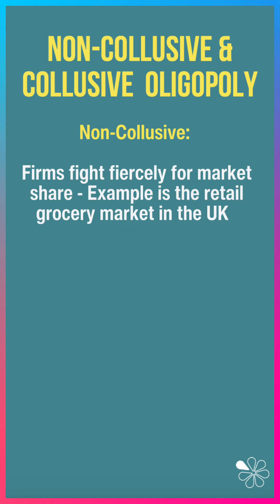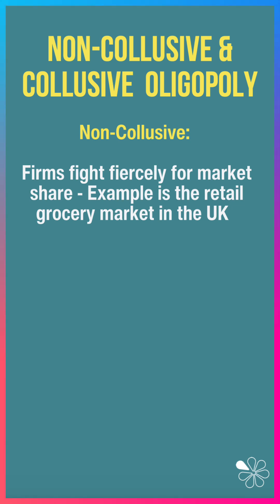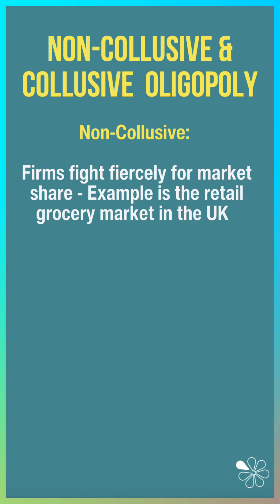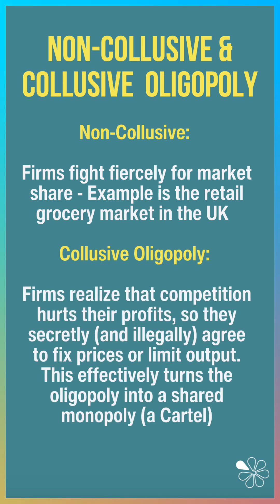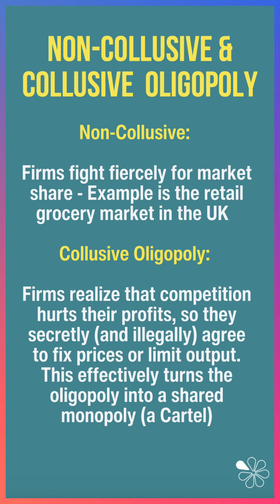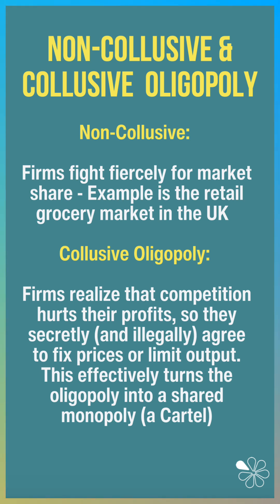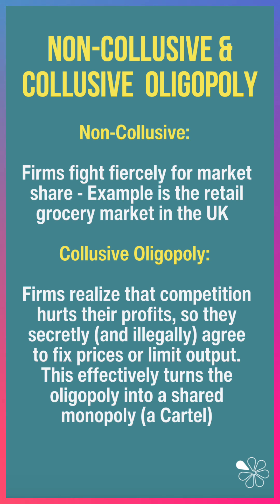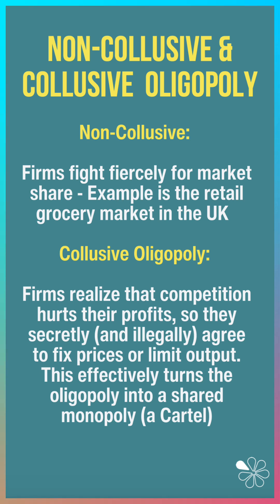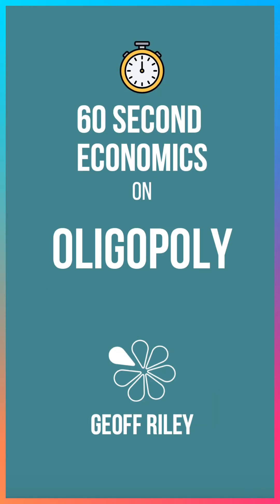A non-collusive oligopoly happens when firms fight fiercely for market share — a good example would be the retail grocery sector in the UK. Whereas a collusive oligopoly is when businesses realise that competition hurts their profits, so they may secretly and illegally agree to fix prices or limit output, effectively turning the oligopoly into a shared monopoly or a cartel.